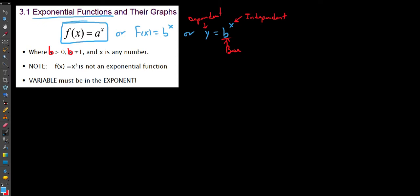Any exponential function is a function of the form f(x) = a^x, which we can also write as f(x) = b^x or y = b^x. The important thing is that this base — a or b — is some positive number that is not equal to 1. Given a positive non-1 number as a base and the variable x as the exponent, we have an exponential function.